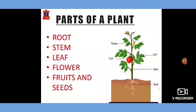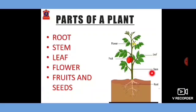Parts of a plant. A plant is divided into two parts. First is the root, that grows below the ground. Another is the shoot, that grows above the ground. The shoot contains stem, leaf, flower, fruit, seeds, etc.